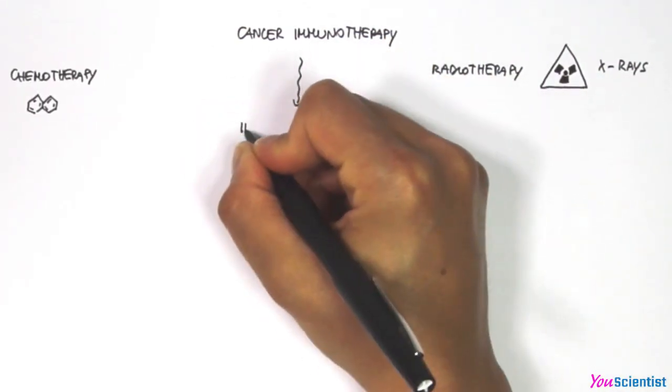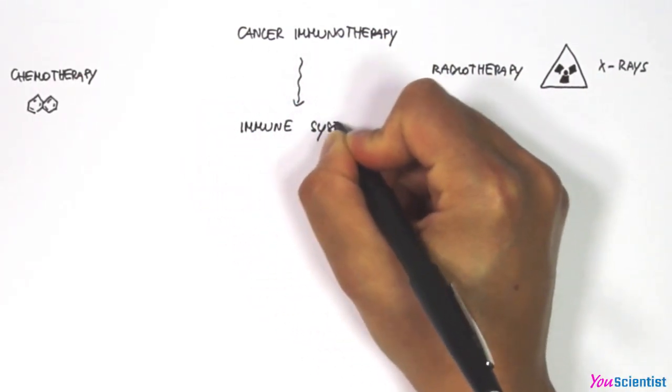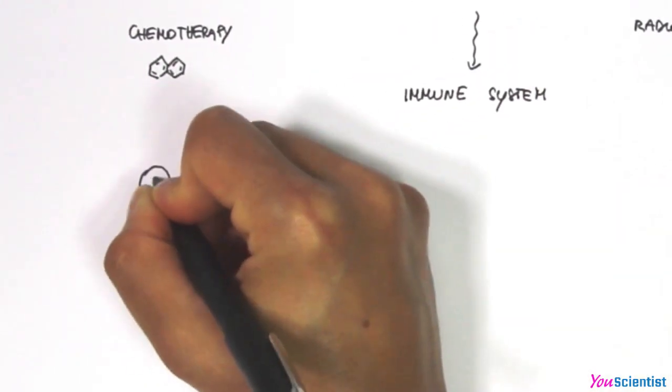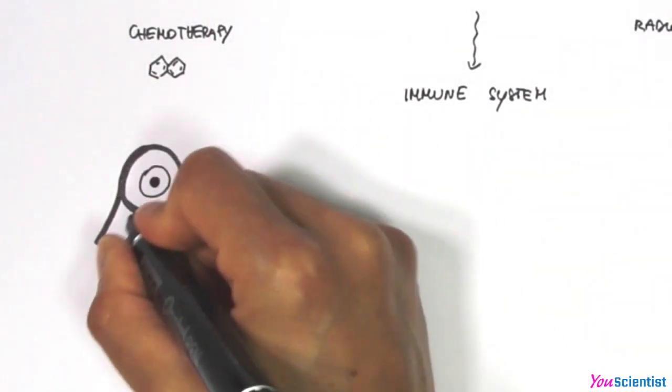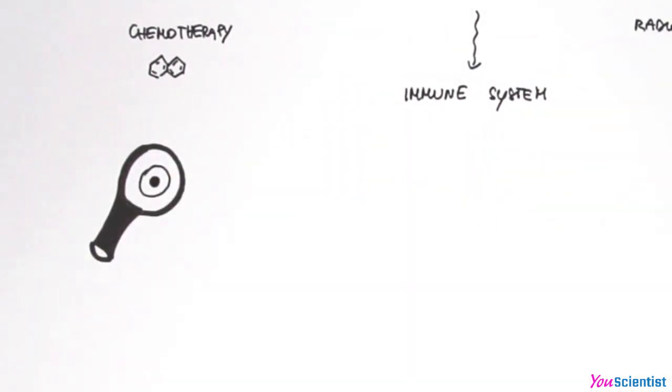Cancer immunotherapy uses the body's own immune system to fight cancer. The immune system is a fundamental surveillance mechanism that continuously checks cells in our tissues.